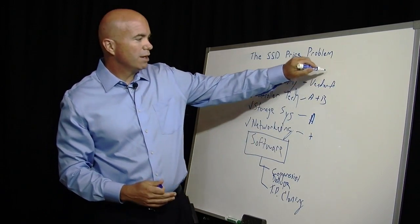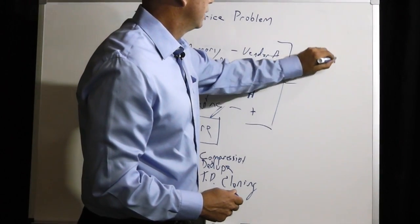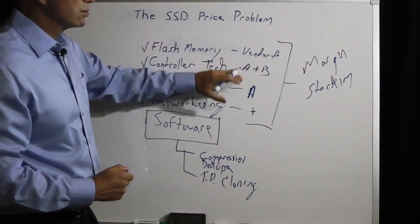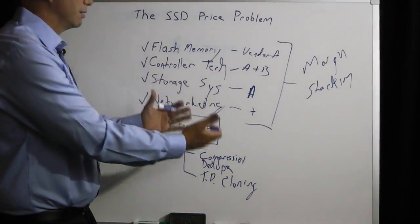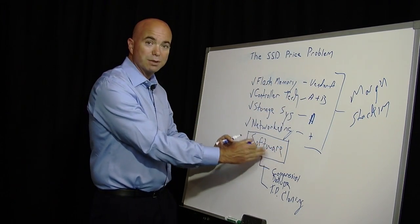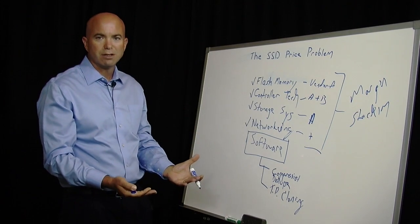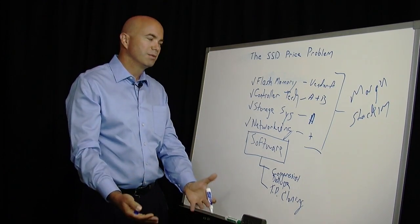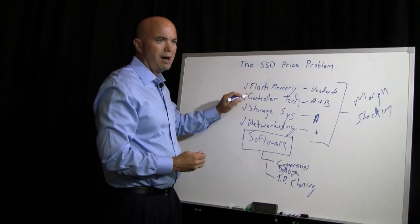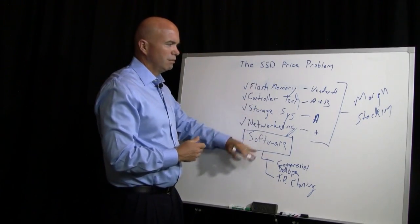What you end up with here is a term that I like to use called margin stacking. All of these component vendors, of course, want to make some money on delivering the product to the eventual OEM. So what's left is the OEM assembles these components, develops some great software, and delivers that to market. This is not new — we've seen this in the hard drive industry when we first started seeing hard drive systems come to market. The problem is that because the cost of these components is still pretty high, you don't have room to play around, and you end up with an expensive solution.